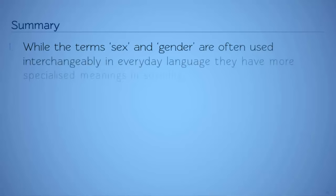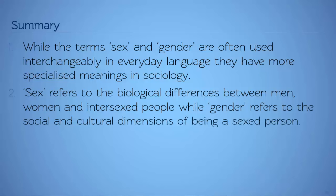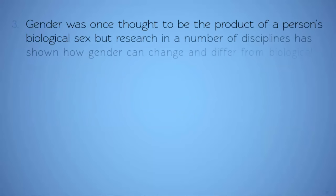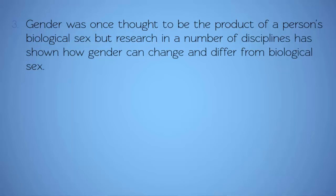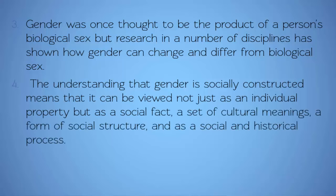In summary: first, while the terms sex and gender are often used interchangeably in everyday language, they have more specialised meanings in sociology. Second, sex refers to the biological differences between men, women, and intersex people, while gender refers to the social and cultural dimensions of being a sexed person. Third, gender was once thought to be the product of a person's biological sex, but research in a number of disciplines has shown how gender can change and differ from biological sex. Fourth, the understanding that gender is socially constructed means that it can be viewed not just as an individual property, but as a social fact, a set of cultural meanings, a form of social structure, and as a social and historical process.